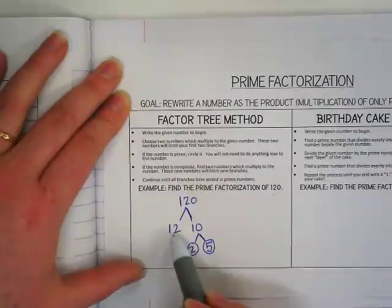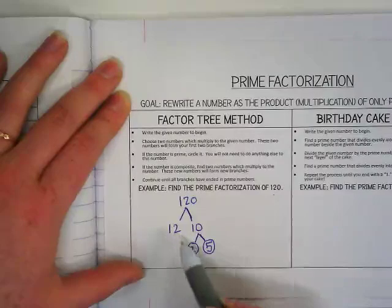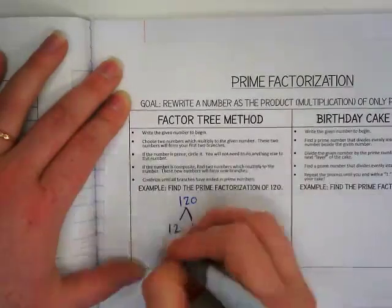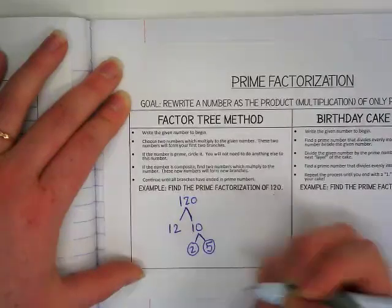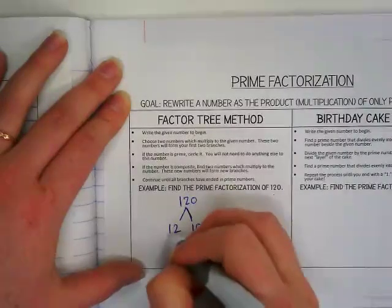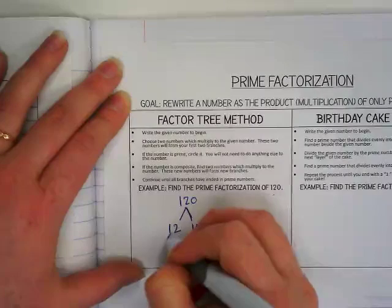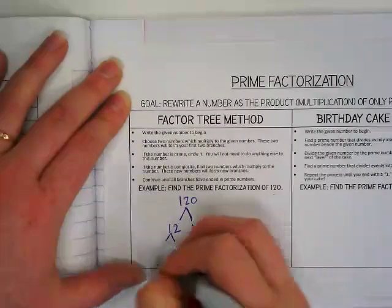Now we will go back up to this factor. What are two factors of 12? I hear 6 and 2, and 3 and 4. To make it different, I'm going to break it up into 3 and 4. We've already seen a 2 factor before. 3 is prime, so I'm going to circle it.